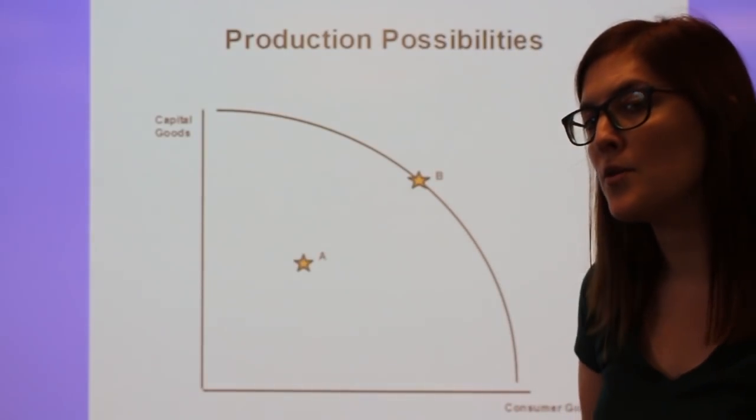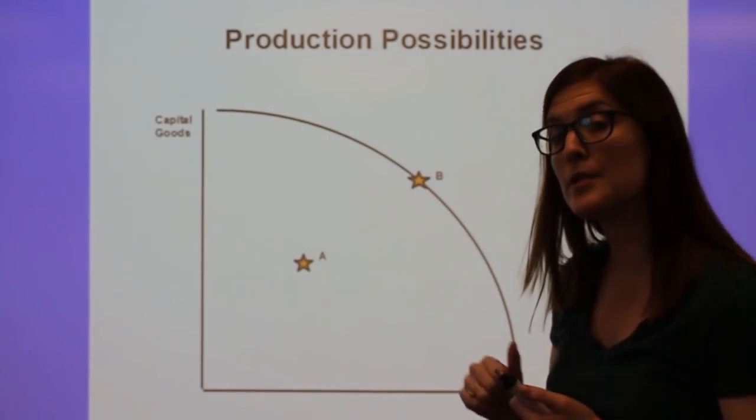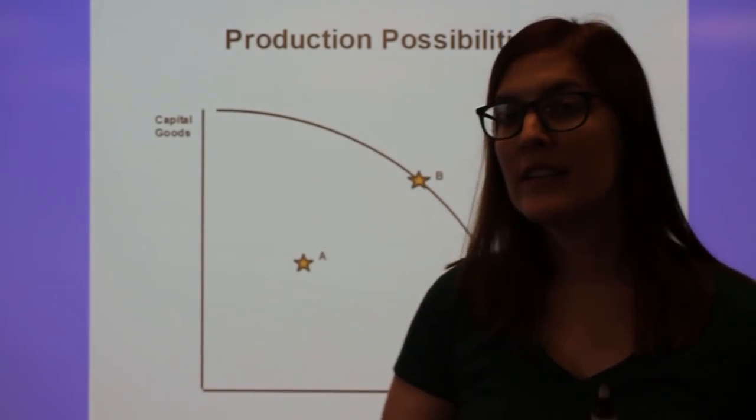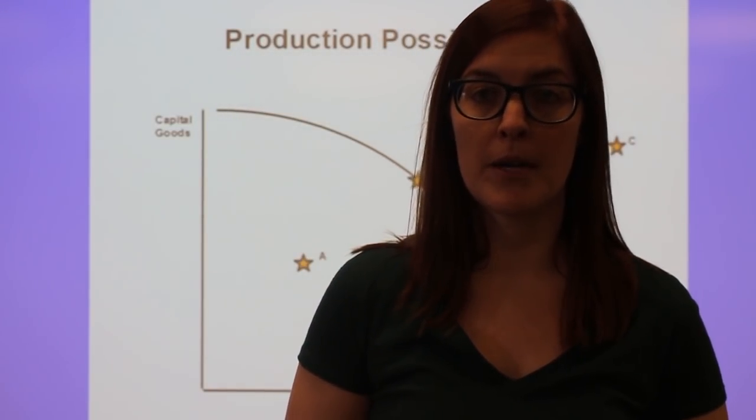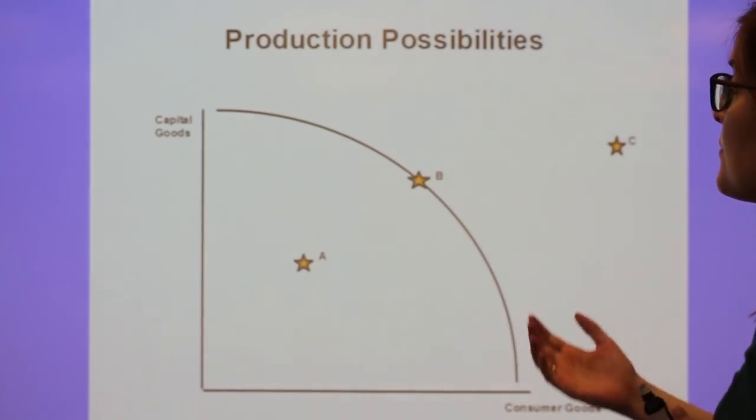The thing that pops up the most on this graph in terms of free response questions is how to correctly label an economy suffering from a recession, inflation, or at long-run equilibrium. And I've illustrated that with these three points.